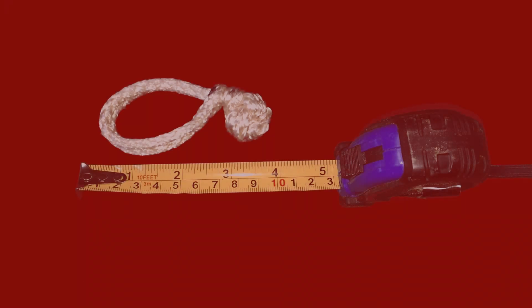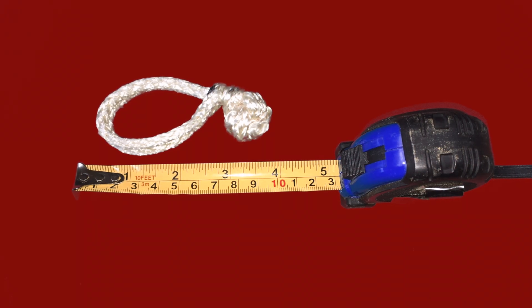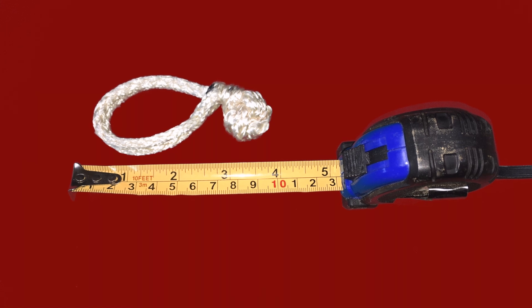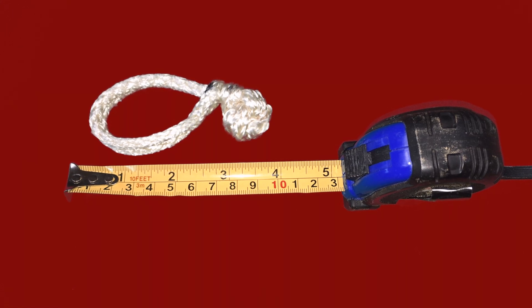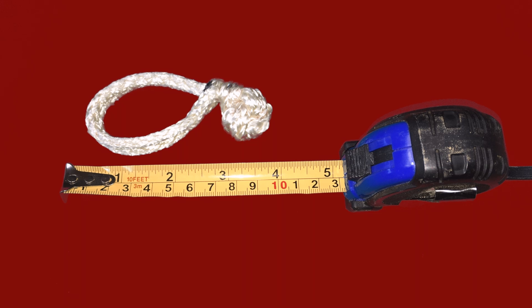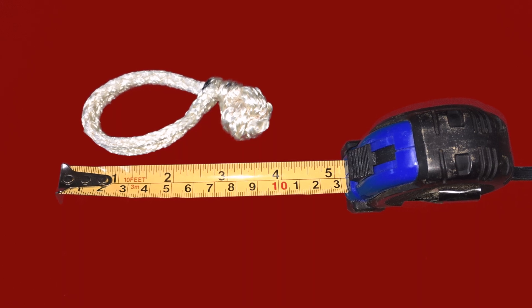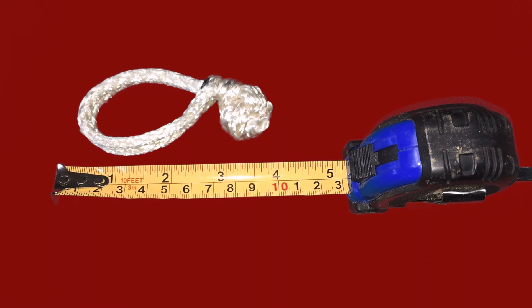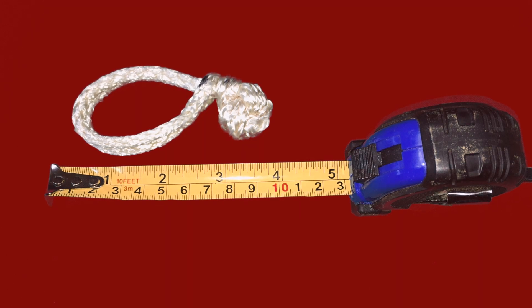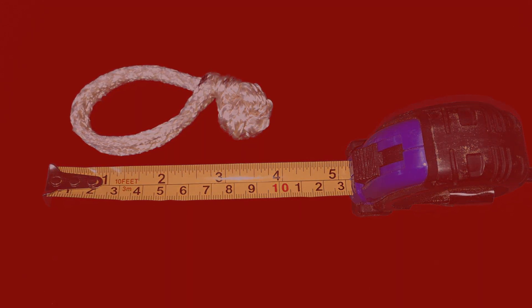The end result will be a soft shackle of approximately 10cm in length using 1 meter of 4mm core. You can extend the length of the soft shackle by 1cm for every 2 additional cm of line.